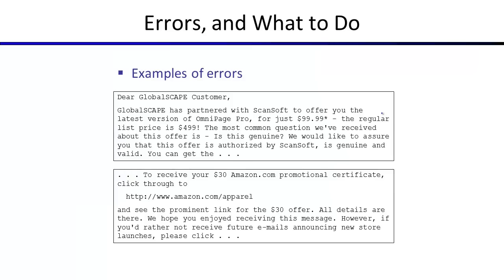The motivation: naive Bayes works well when the model's assumptions are good and features are homogeneous, like word occurrences. But you'll still have errors. For example, 'Dear GlobalSCAPE customer... offer you the latest version of OmniPage Pro for just a hundred dollars' versus 'To receive your thirty dollar Amazon promotional certificate click through to amazon.com/apparel' — the classifier got these wrong. Whether these are spam depends on whether the offer was unsolicited, which isn't visible in the words.